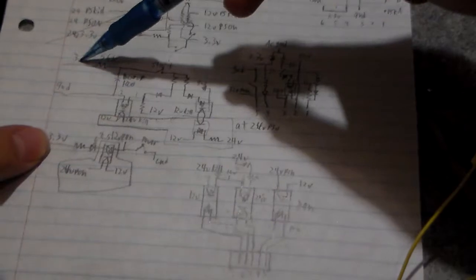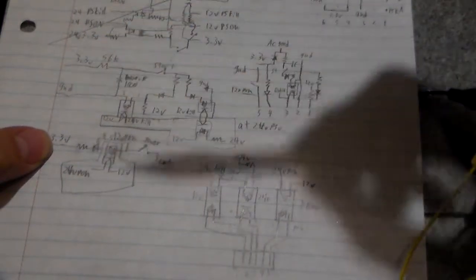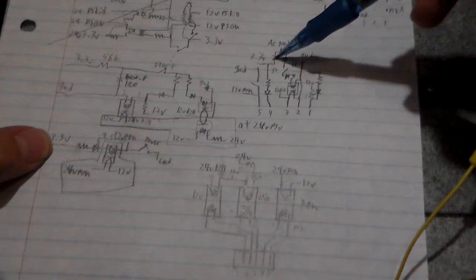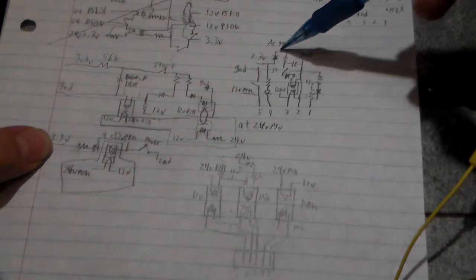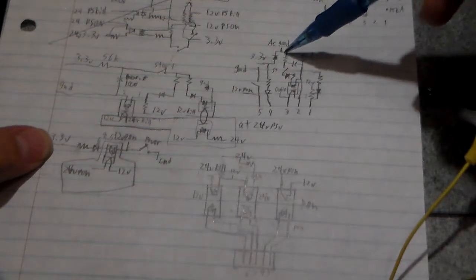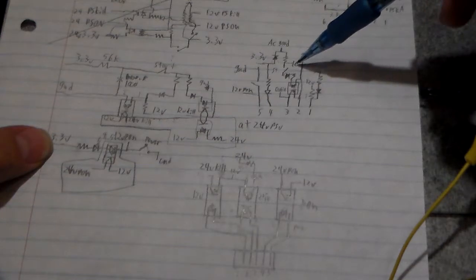So instead of the 3.3 volts going straight to the resistor, I have it 3.3 going straight to the resistor. But it's going, instead, going through a diode, going to the AC good pin, which goes to the resistor, which goes to the capacitor.